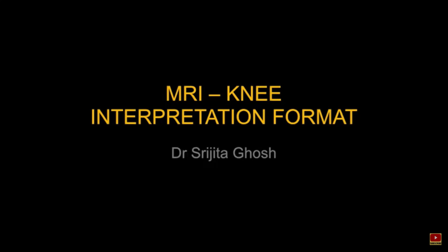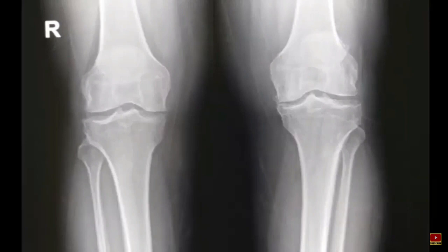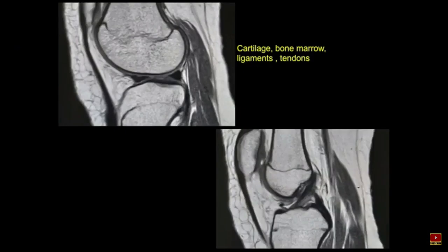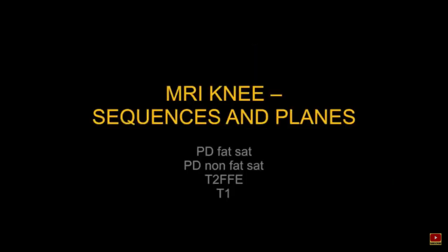Plain radiograph does not give us a clear idea about what is happening inside the knee joint, and MRI reveals certain details like bone marrow, articular cartilage, menisci, tendons, ligaments, soft tissue, and muscles in much greater detail. The basic sequences that we need universally are proton density fat sat, non-fat sat, T2-FFE to look for blood products, and also T1 to look for fracture lines.